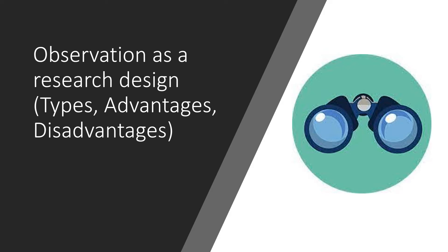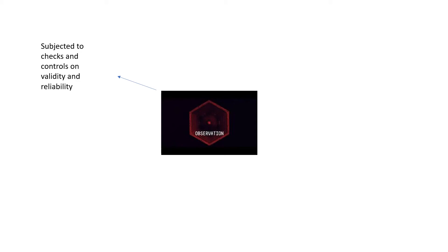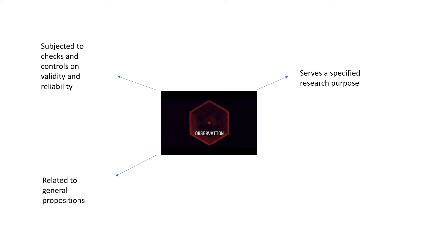Their movements, work habits, statements, facial expressions showing joy, anger and other emotions, as well as body language can be observed. Observation as a research design has the following characteristics: firstly, it can be subjected to checks and controls on validity and reliability; it serves a specified research purpose; it is related to general propositions and recorded systematically rather than simply presented as an interesting set of curiosities; and finally, it is planned more systematically than other research designs.